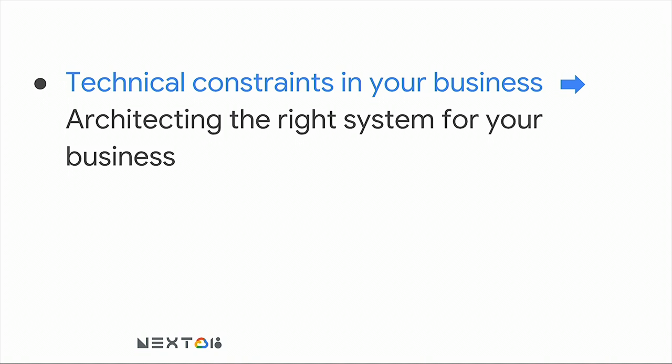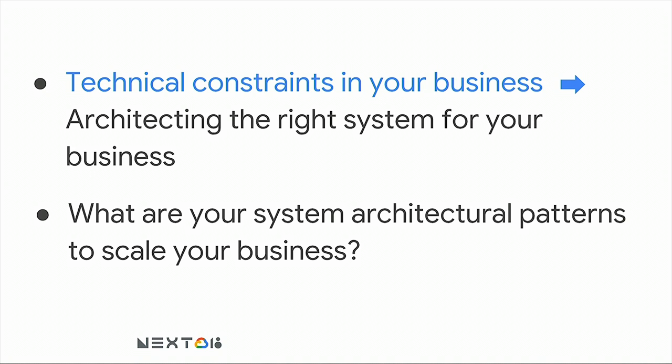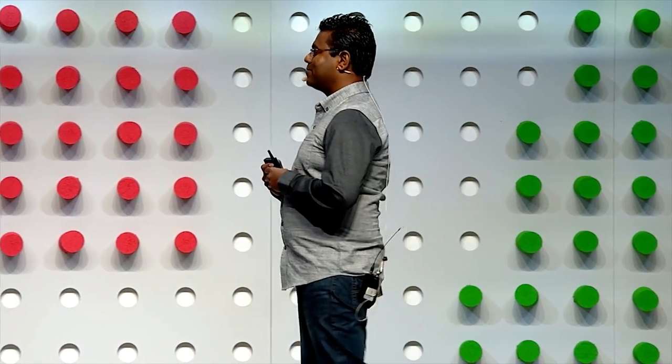Going back to the scalability theme: when thinking about the theory of constraints for your business, you're no longer worried about building complex distributed systems. The focus has shifted to architecting the right system for your business. So let me ask you: for the systems you're running, from a scalability standpoint, what are the trade-offs you're making? What failure modes and bottlenecks are you worried about?